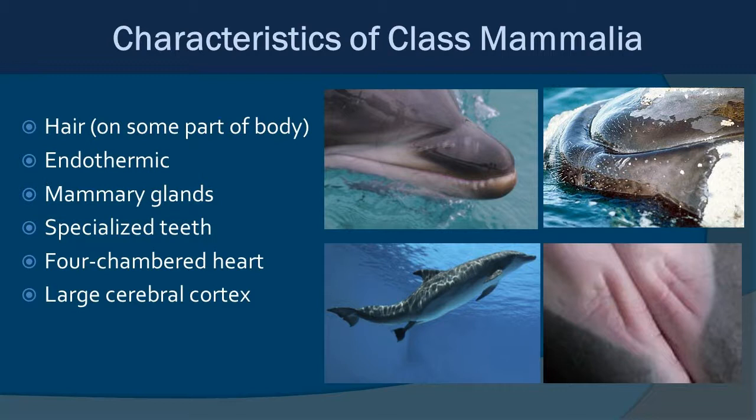The term 'Class Mammalia' comes from mammary glands, and all mammals have them. On the bottom right you can see the mammary slits of a dolphin. If you've ever wanted to know the difference between a male and female dolphin: females have a division sign — the mammary slits are on either side — and males have an exclamation point.